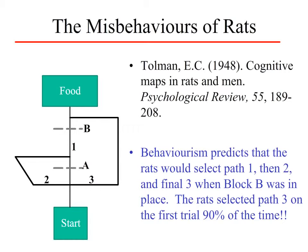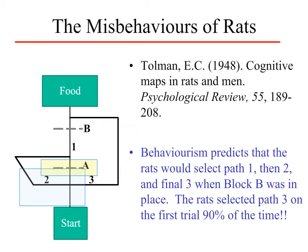Tolman's classic article, 'Cognitive Maps in Rats and Men,' highlights some of the ways in which the rats did not follow behaviorist predictions. For example, let's have our rats start at the start box, and their job is to get to the food box as quickly and efficiently as possible. With no roadblocks, they're going to take path number one straight from the start box to the food box. However, if we put a roadblock in at point A, both the cognitive and behaviorist approaches would predict that the rats would hit that roadblock, come back to the choice point, and take path number two. And it turns out the rats did that — but that's not the interesting component here.